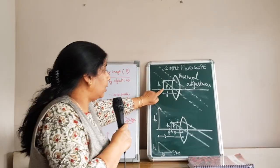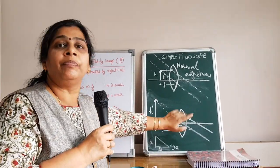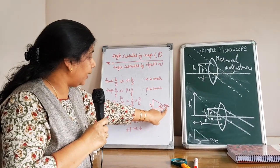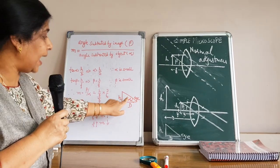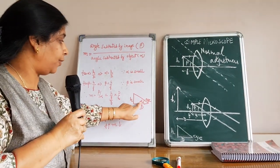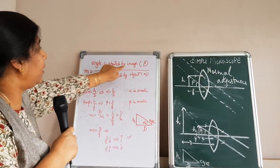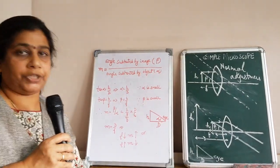We have to do simple microscope in two positions: when the object lies at focus and when the object lies between focus and optical center. The angle which the object makes with the eye, we call alpha. The magnification is defined as angle subtended by the image to the angle subtended by the object.